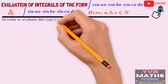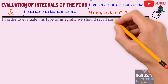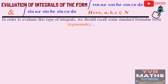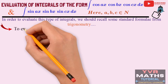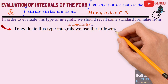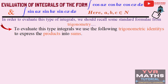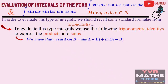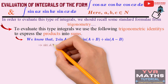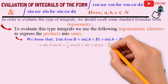To evaluate integrals of this type, we shall recall some standard formulae from trigonometry learned in classes 10 and 11. We should follow some trigonometric identities to express products into sums. We have already discussed four formulas in the previous two videos. The first identity is: 2·sin(A)·cos(B) = sin(A+B) + sin(A−B), so sin(A)·cos(B) = ½·[sin(A+B) + sin(A−B)].